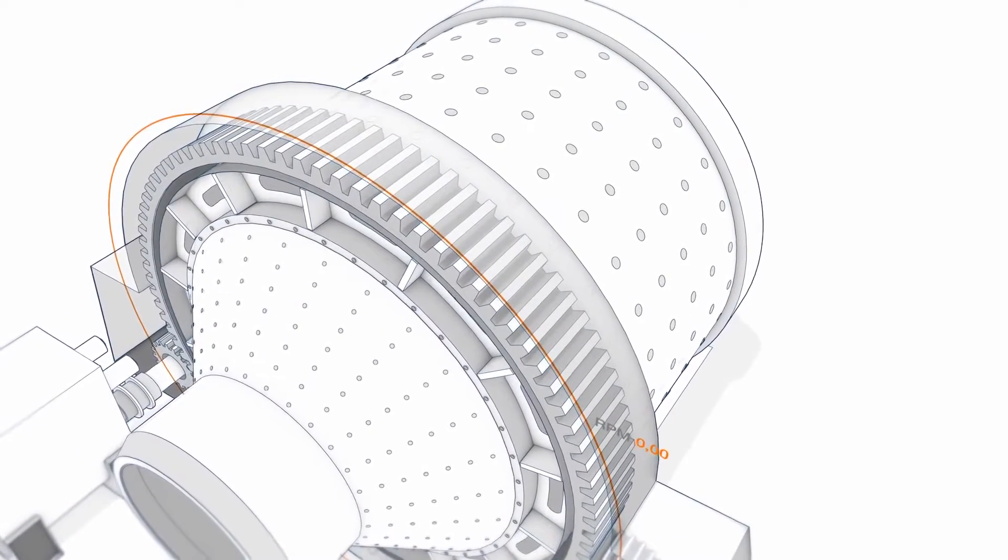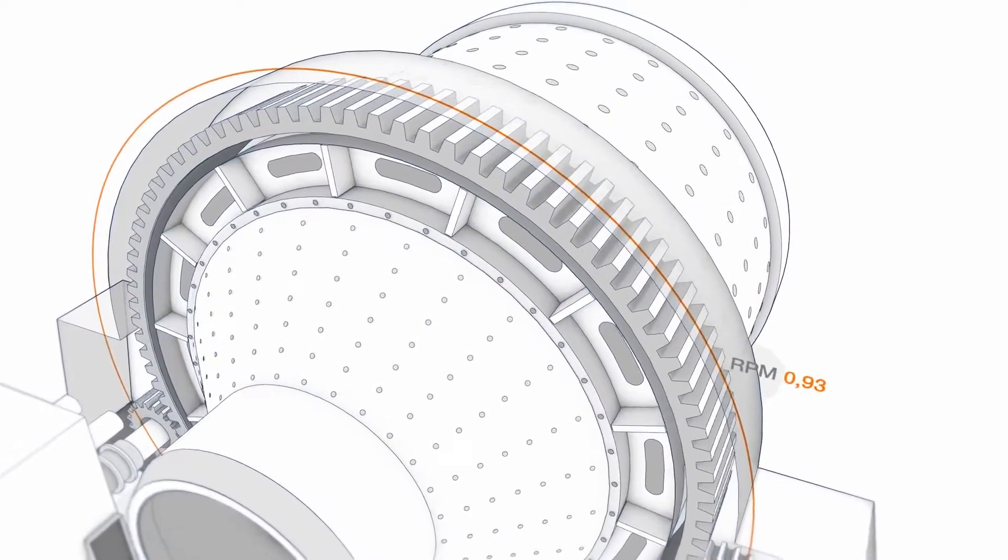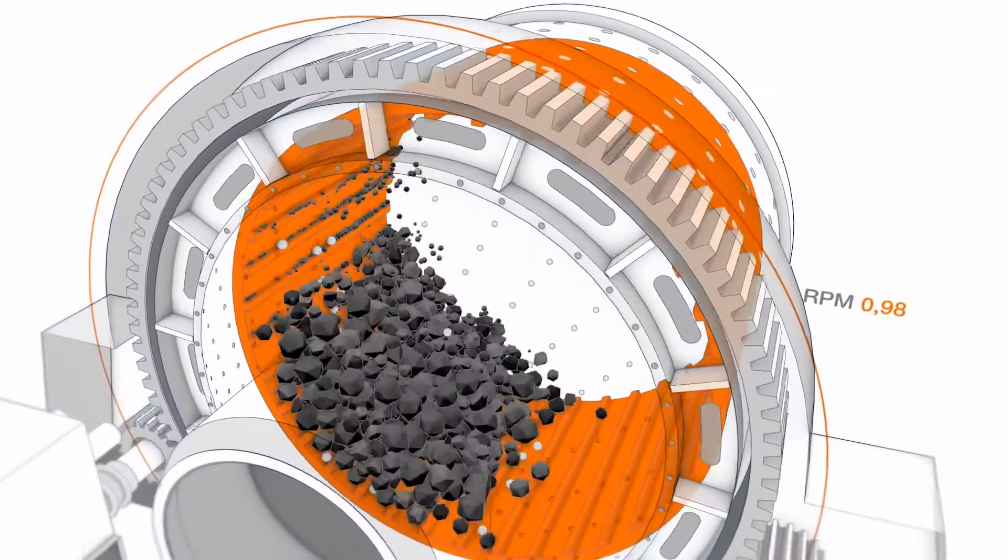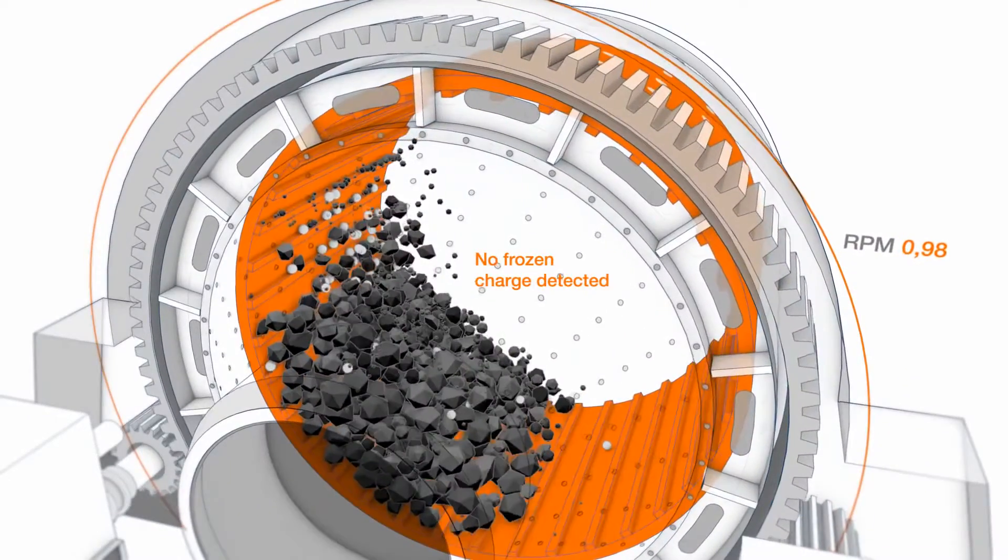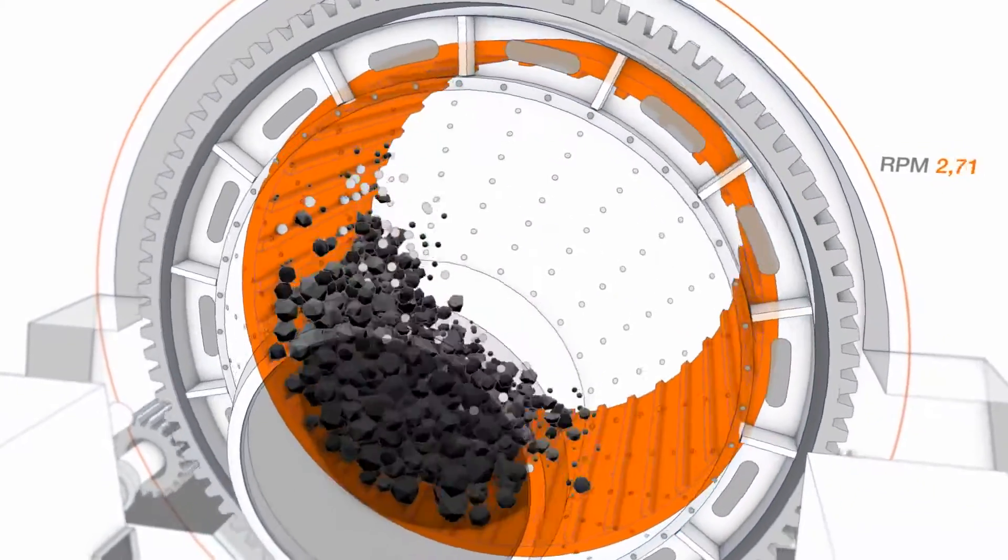The mill starts moving slowly in a frozen charge detection mode. Once the ore input successfully cascades, the drive releases the mill to normal operation and it accelerates to nominal speed.